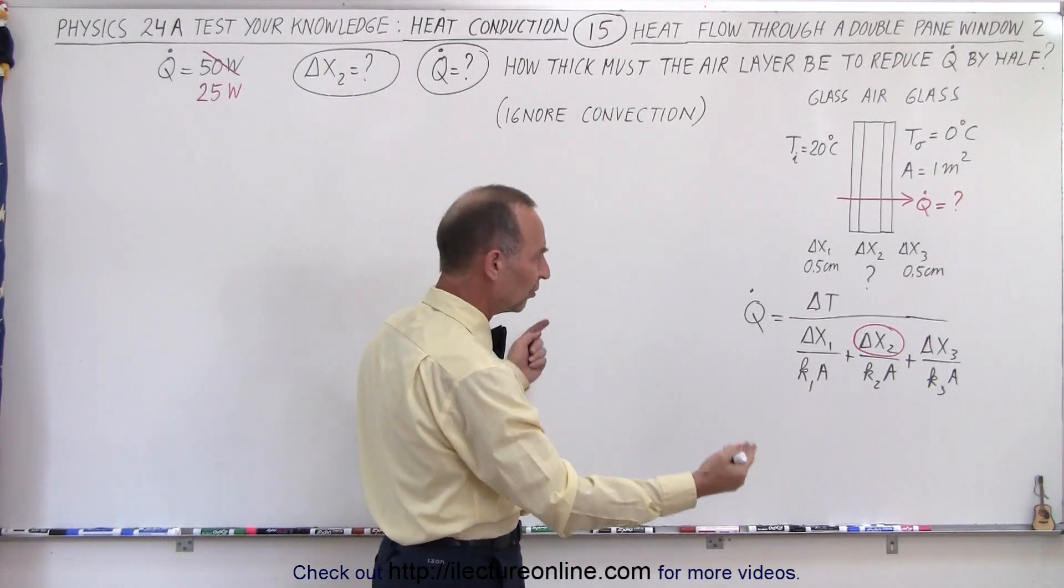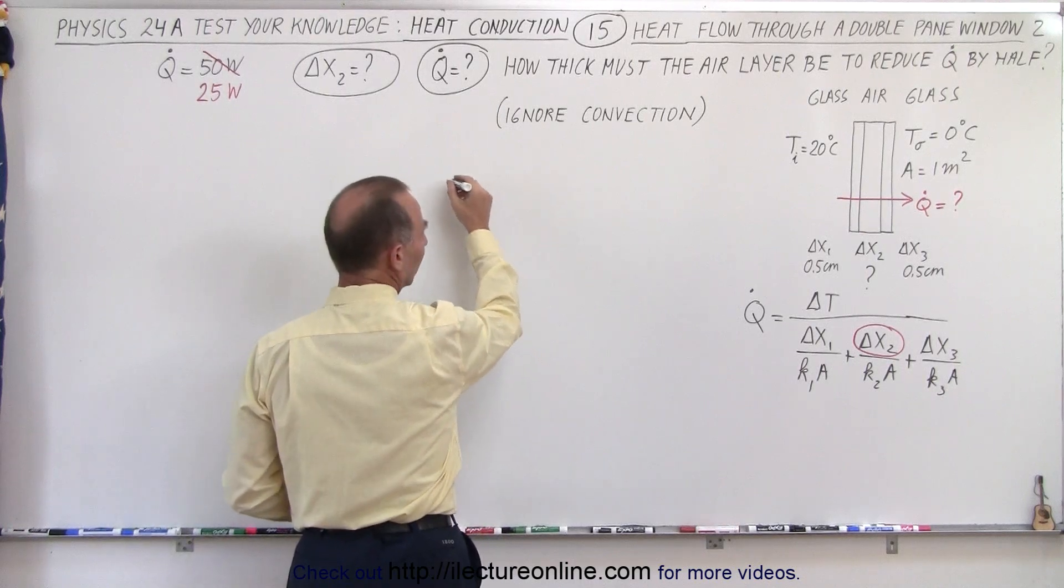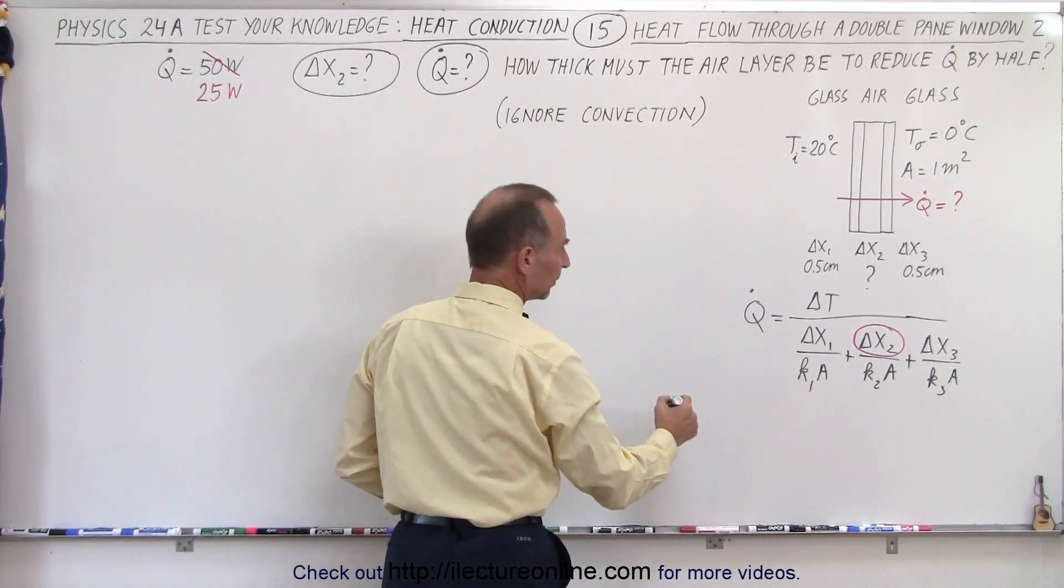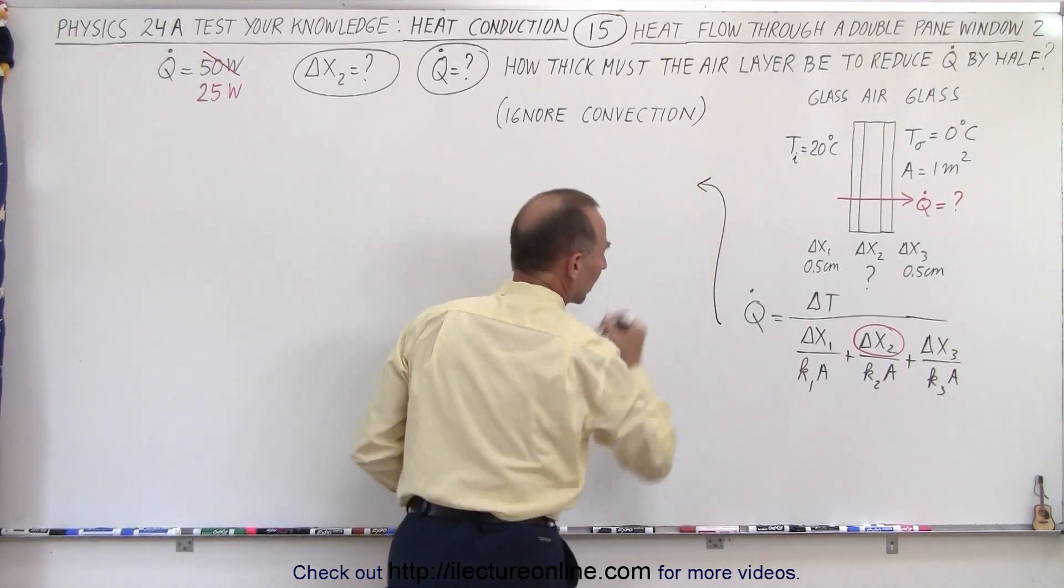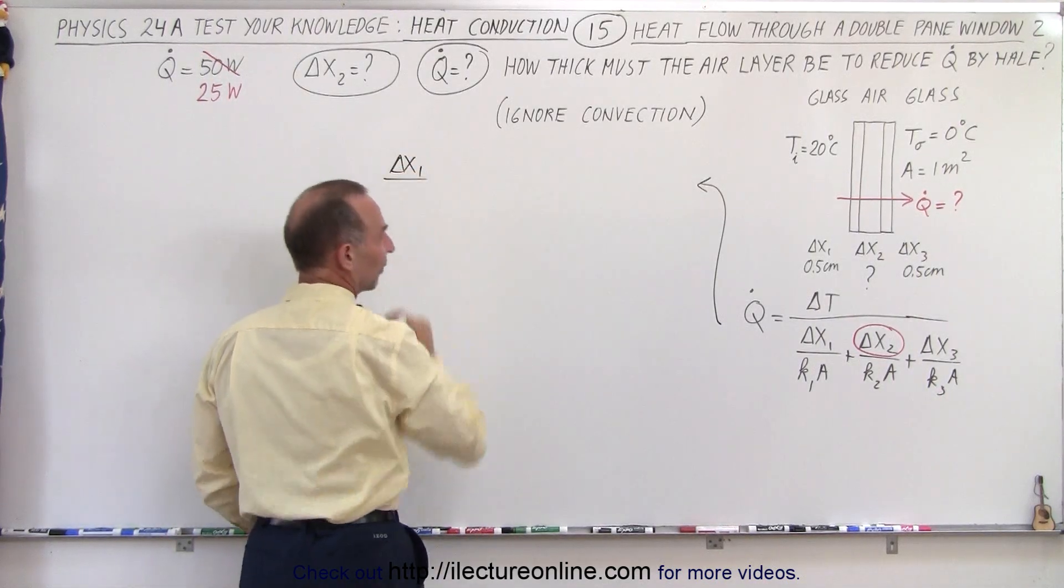How do we do that? Well let's cross multiply and so we end up on the left side, we end up with, well, let's come over here. So we have delta x1 divided by,